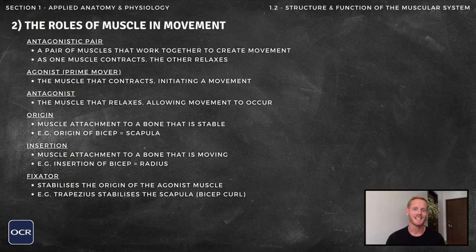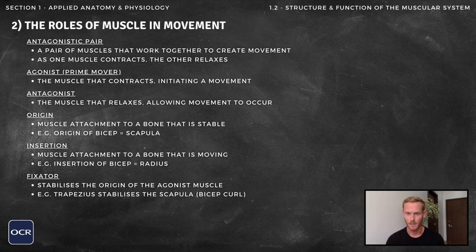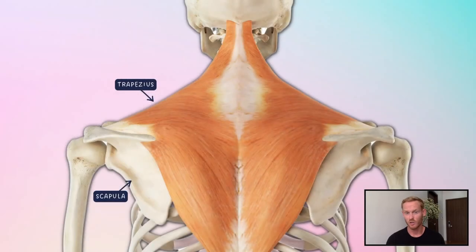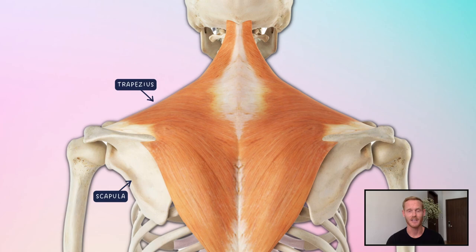Finally, a fixator muscle is one that stabilises the origin of the agonist muscle. During a bicep curl, the trapezius muscle stabilises the origin of the biceps — the scapula — restricting any unwanted movements at the shoulder joint.